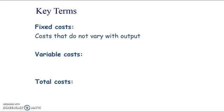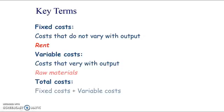Key terms for this section are fixed costs, which are costs that do not vary with output. An example would be rent — you have to pay it regardless of whether you produce 100 units or 10,000 units. Variable costs are costs that do vary with output, such as raw materials. The more you make, the more raw materials you need. A lot of costs, though, have elements of being both fixed and variable.